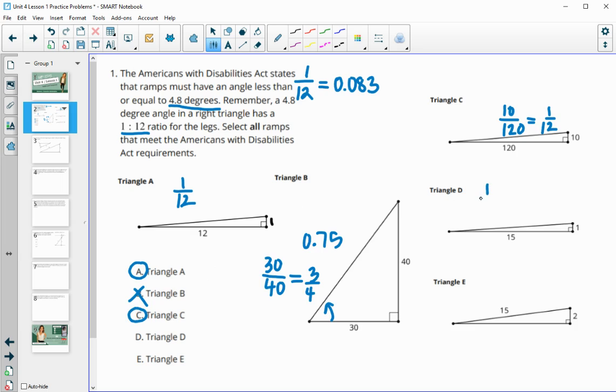Triangle D is 1 over 15. And 1 over 15 is less than 1 over 12. So this one is good. And if you are struggling with that and you divided this down, 1 divided by 15 is 0.066. So that is less than the 0.08 requirement. So that's going to show you it's good.